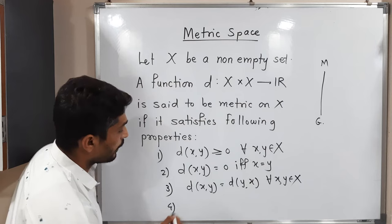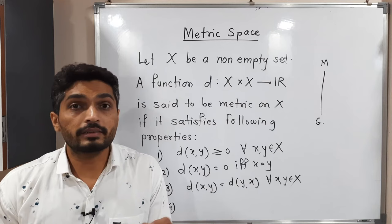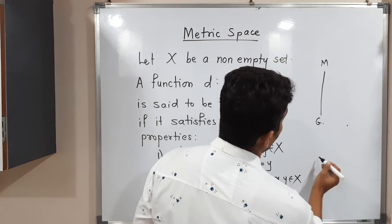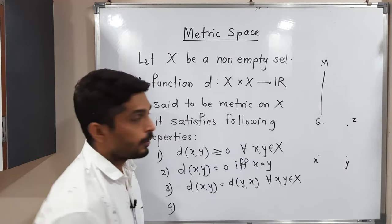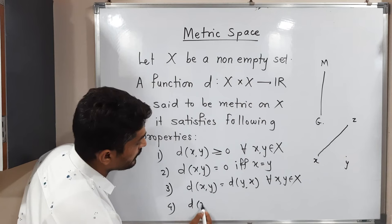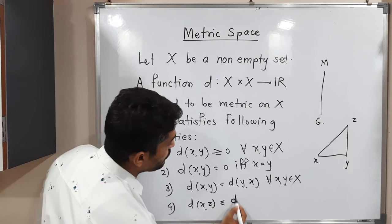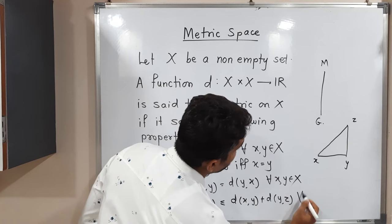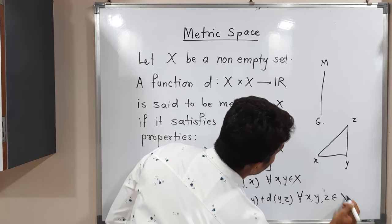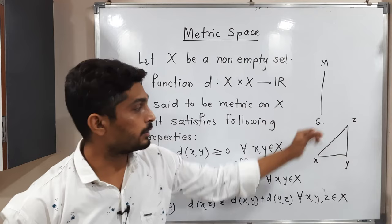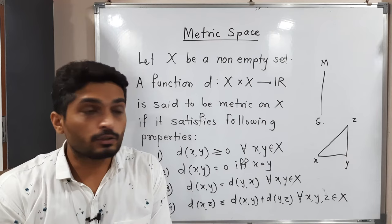The last property is special — we call it the triangle inequality. Consider any three points X, Y, and Z. The distance between X and Z is less than or equal to the distance between X and Y added to the distance between Y and Z, for all X, Y, Z belonging to X. The direct distance between X and Z is always less than or equal to the sum of distances X to Y and Y to Z. When we visualize this, one triangle is formed — that is why we call it the triangle inequality.